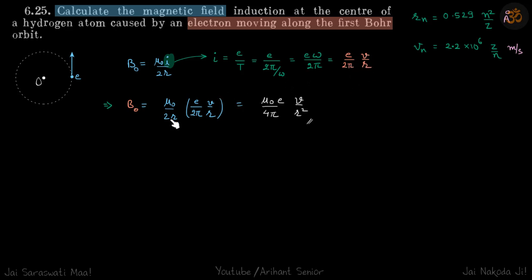So we just put this value here and we'll get B0 as mu0 e v by 4 pi r square, our answer.